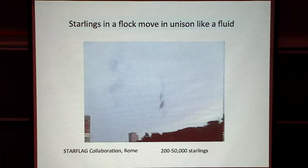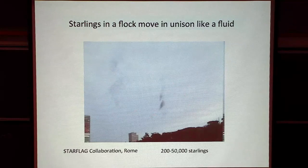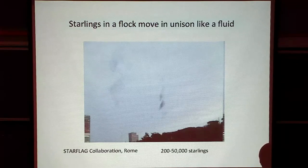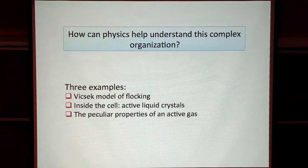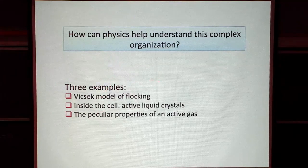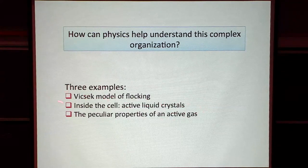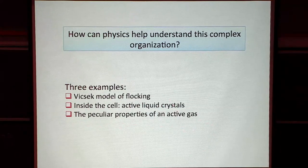The speed at which information is transmitted through the flock is much larger than the reaction time of an individual starling. Something happens collectively that drives this type of organization. The flock itself looks sort of like a soft deformable body or a fluid moving around in the sky. I'd like to go through three examples of how we try to understand this: first, the Vicsek model of flocking; then we'll go inside the individual cell and look at active liquid crystals; and maybe an active gas.